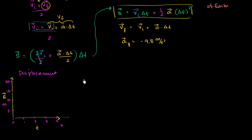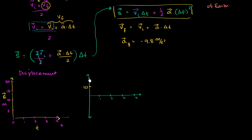At the same time, I want to do a velocity graph. The velocity will be going up and down, so we need positive and negative values, but time will only be positive. I care about 1, 2, 3, and 4 seconds in time. On the velocity axis: 10, 20, negative 10, and negative 20 meters per second. This is my velocity graph.